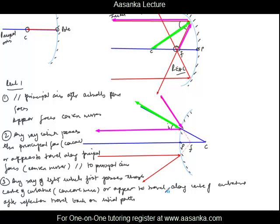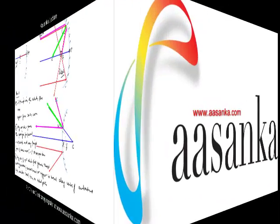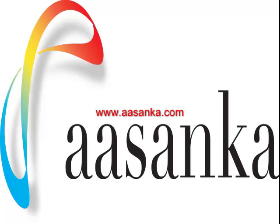So these three rules will be used often in many situations. We have seen the case where the object is at infinity — rays come in parallel and, in the case of a concave mirror, meet at the focus; in the case of a convex mirror, they appear to meet at the focus.